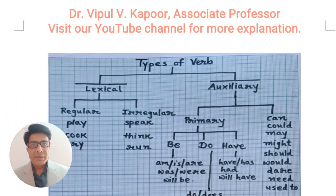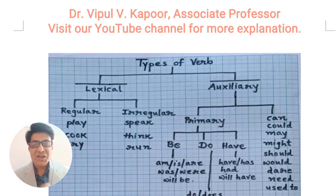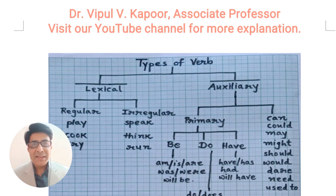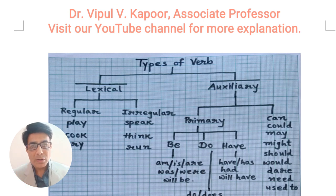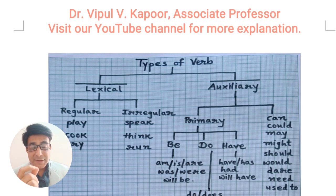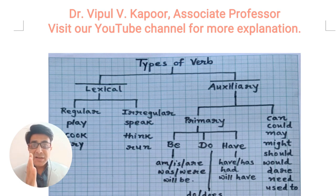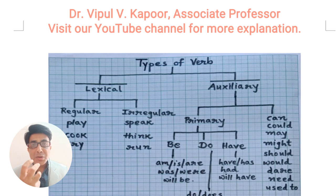Hello friends, welcome again. In our previous video lecture, we discussed different parts of speech of the English language. Today we want to discuss one very important topic of English grammar, and that is different types of verbs. We know that in any language, verbs play a very important role. In fact, verb is considered as the heart and soul of a sentence. You cannot make a sentence without a verb, and that's why it's very important for us to understand different types of verbs used in the English language.